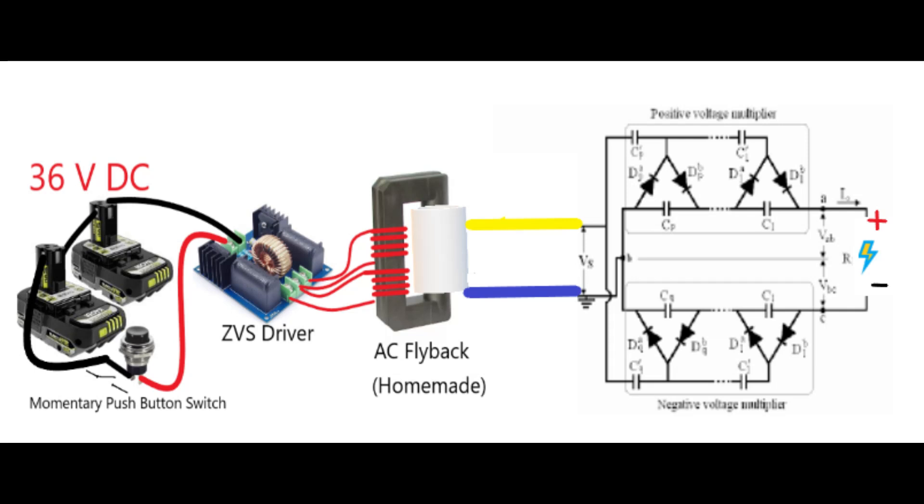First, you'll need a power source. For this, I used two 18 volt Ryobi batteries connected in series to get 36 volts DC to power my ZVS board.